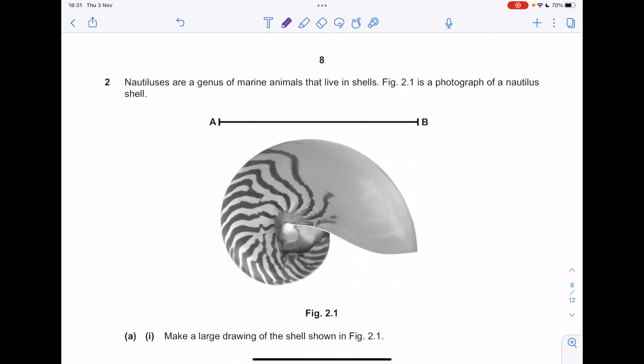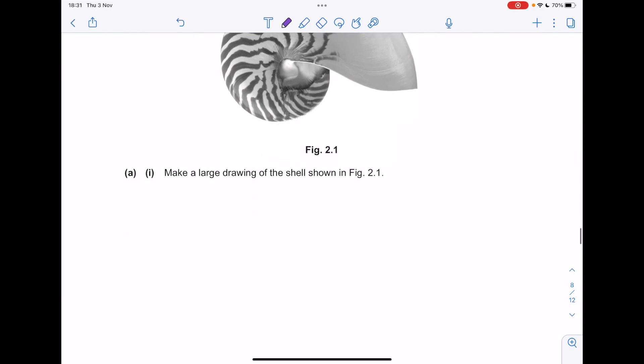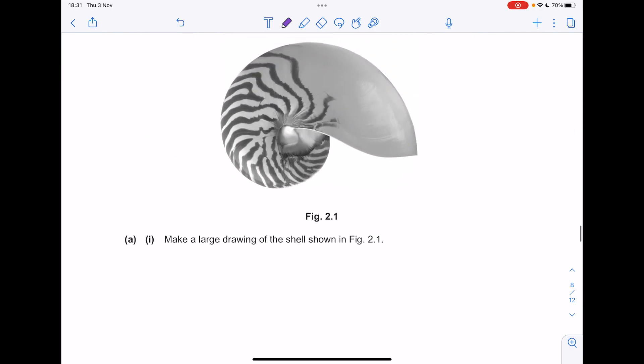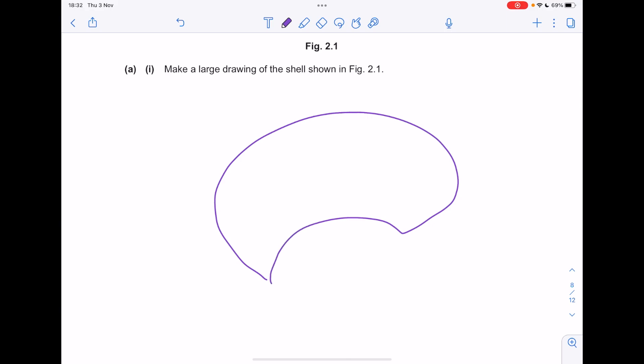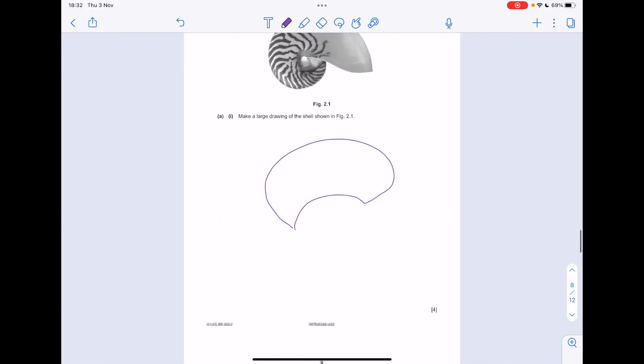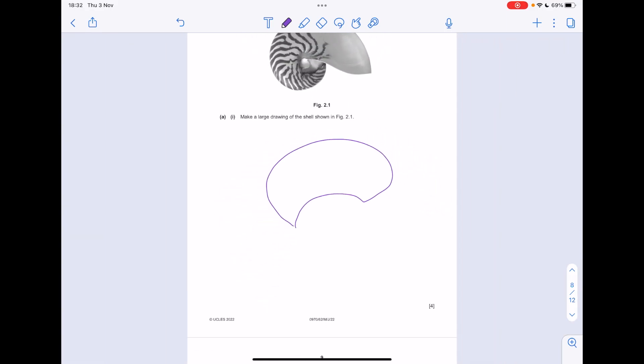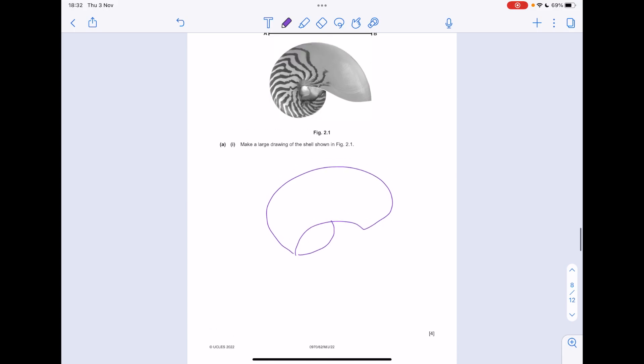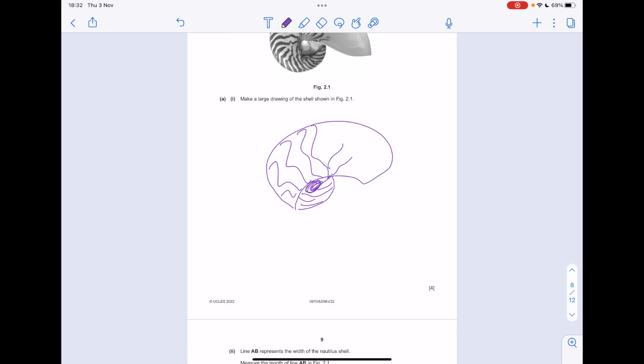Nautiluses are a genus of marine animals that live in shells. Figure 2.1 is a photograph of a nautilus shell. Make a large drawing of the shell shown in figure 2.1. I really hate this drawing part. Let's show those important stripes. So hard if you can't draw like me. And they want the hole being made visible. That is dreadful.